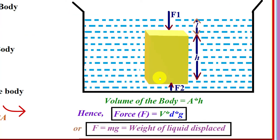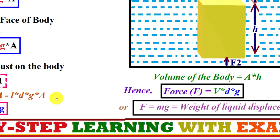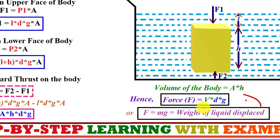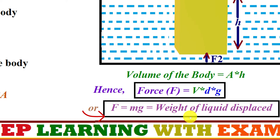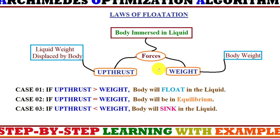Volume is the amount of space occupied by the body, so volume equals area times body height — that is, v = a × h. Replacing a × h with v, we get net force = v × d × g, or equivalently f = m × g, which is the weight of the liquid displaced. So we can see the different forces acting on a body immersed in a liquid.